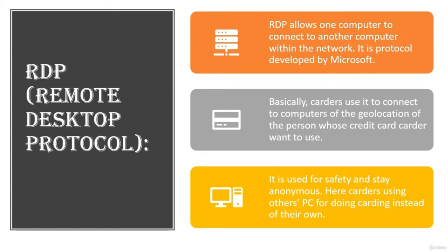RDP: RDP allows one computer to connect with another computer within the network using Microsoft's internet protocol. Carders use it to connect to a computer at the geolocation of the credit card owner they want to use, to stay safe and anonymous. There are various RDP services available such as AWS (Amazon), Google, Squeak Lab, and others. Always use a paid RDP.